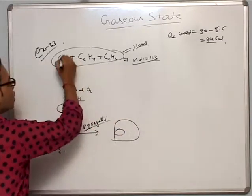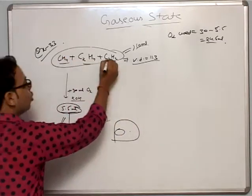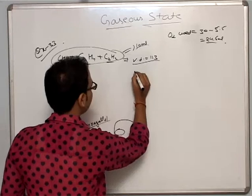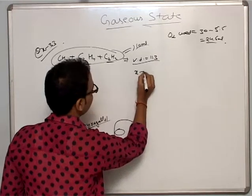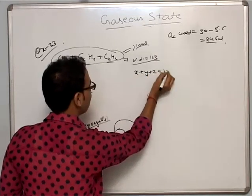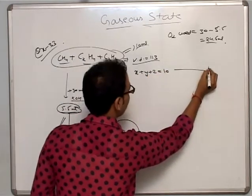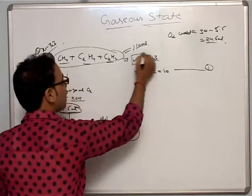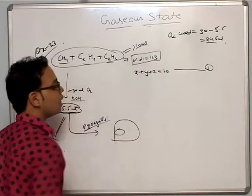Now, suppose we have three components with volumes x, y, and z. So x plus y plus z equals 10. This is our first equation.